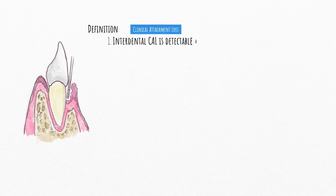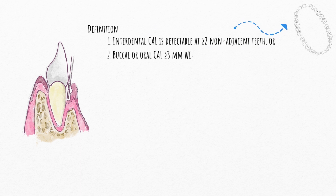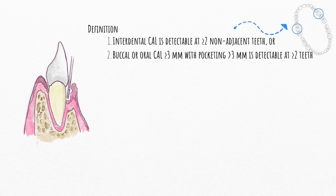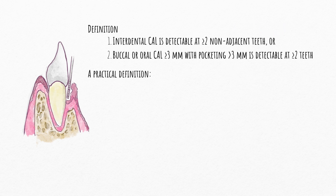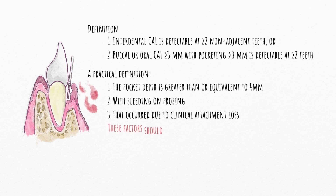Before we begin, we must first go over the revised definition of a periodontitis case. Periodontitis is defined as interdental CAL detectable at more than or equal to two non-adjacent teeth, or buccal or oral CAL more than or equal to three millimeters with pocketing of more than three millimeters detectable at more than or equal to two teeth. A more practical approach: a patient will be diagnosed as a periodontitis patient if pocket depth was greater than or equal to four with bleeding on probing due to clinical attachment loss, detectable at two or more non-adjacent teeth.